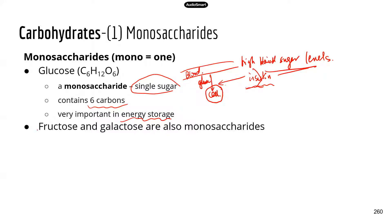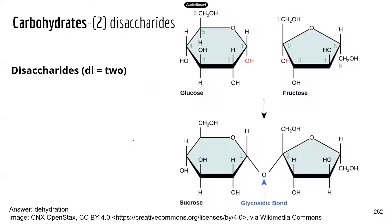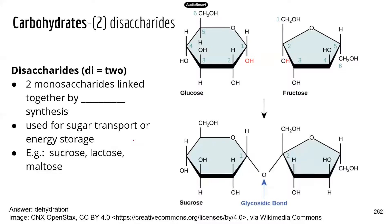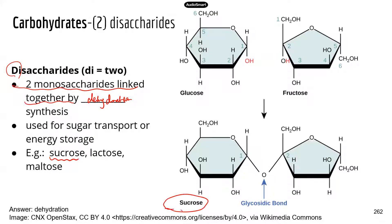Other monosaccharides include fructose and galactose — and yes, we do use them in daily life. Disaccharides — di means two — are molecules made up of two monosaccharides joined together by dehydration synthesis, also called condensation synthesis. Disaccharides are used for sugar transport and energy storage. A good example is sucrose, the common sugar we use for cooking and baking.